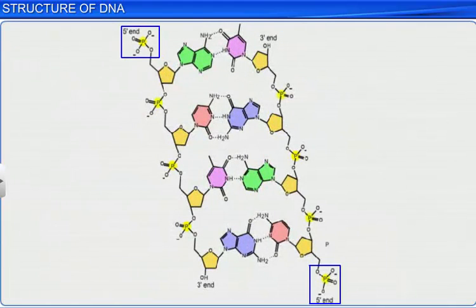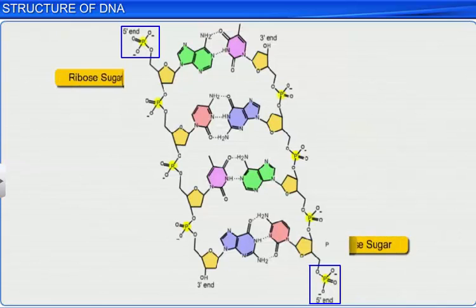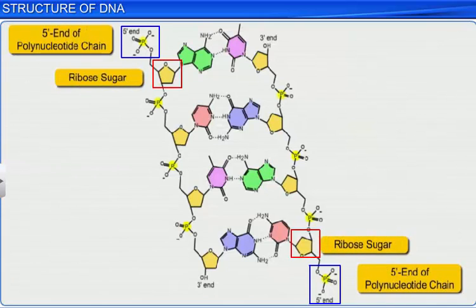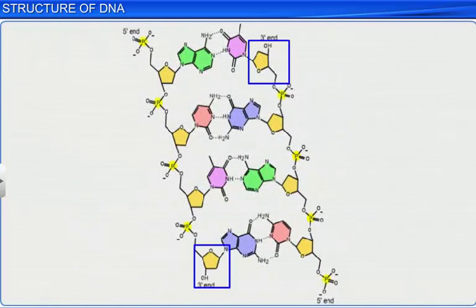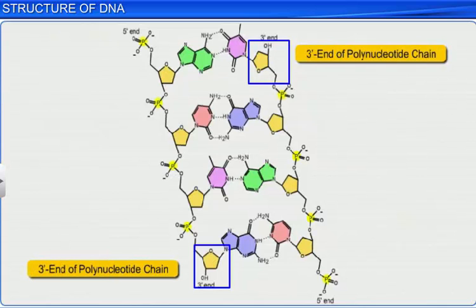At one end of this chain is a free phosphate moiety at the 5' end of ribose sugar, which is called the 5' end of the polynucleotide chain. Similarly, at the other end of the chain is present a ribose with a free 3'-OH group, which is called the 3' end of the polynucleotide chain.